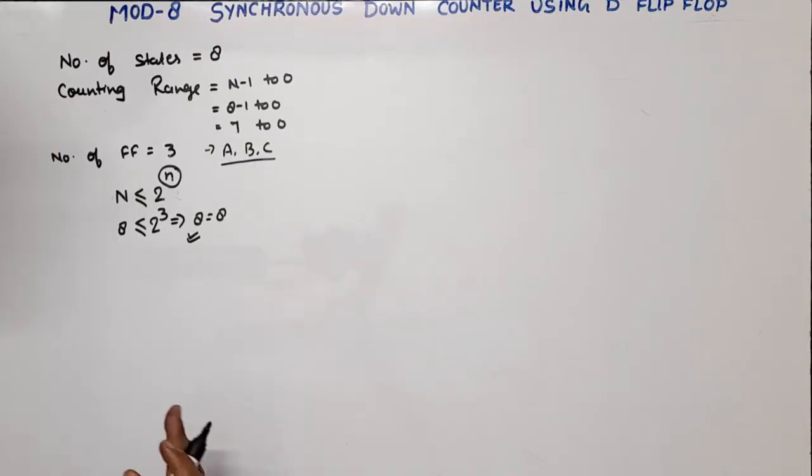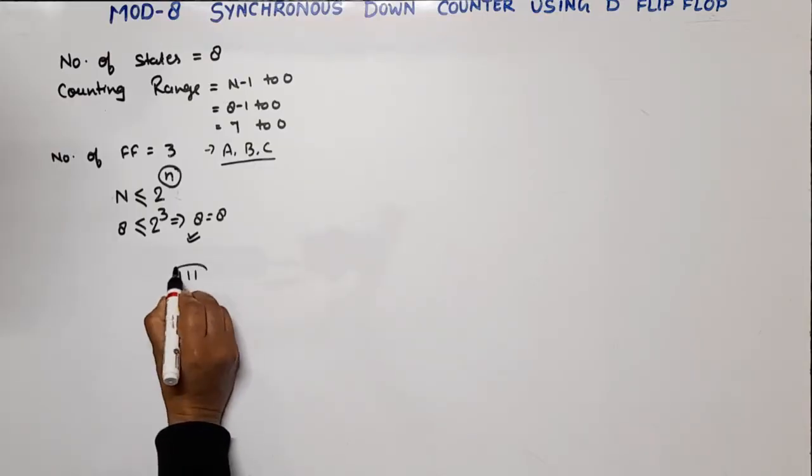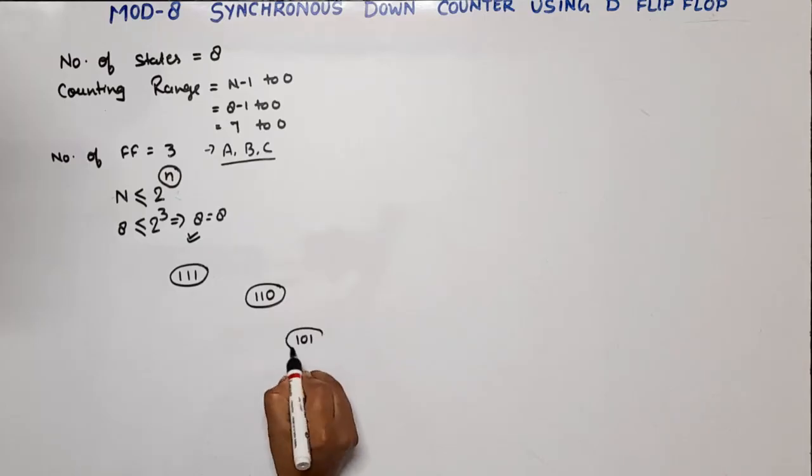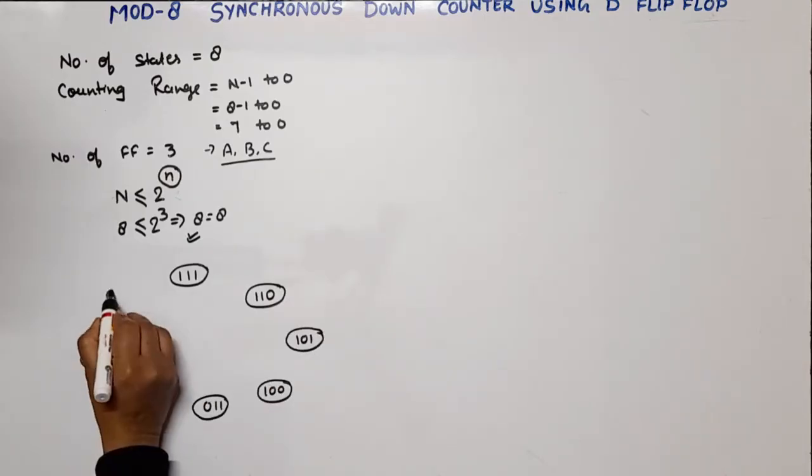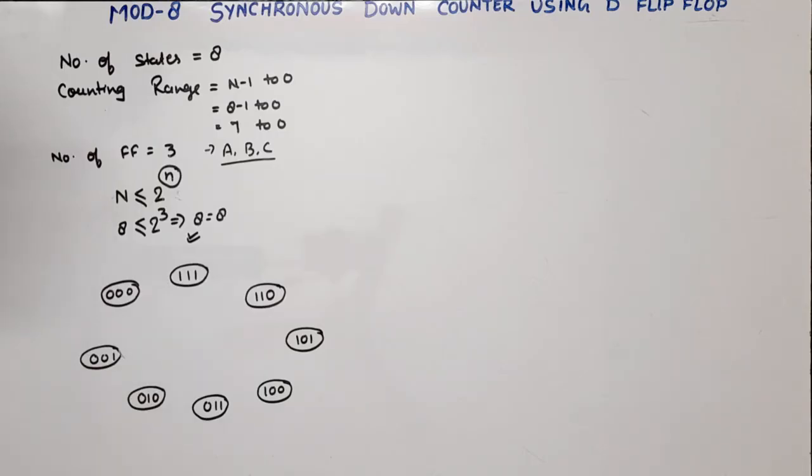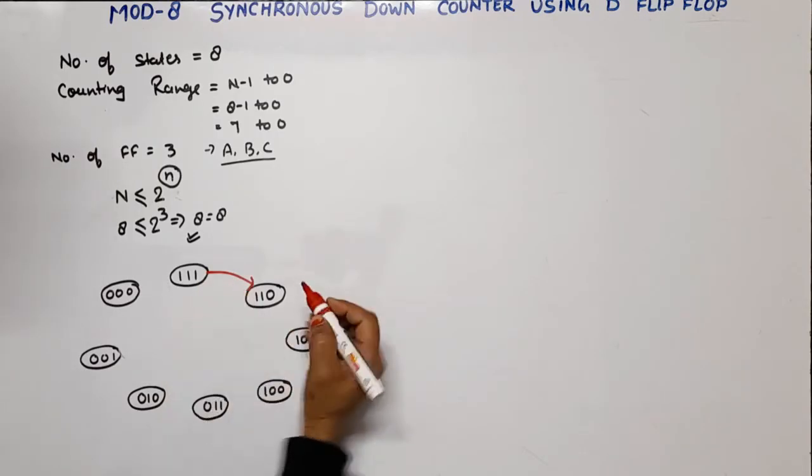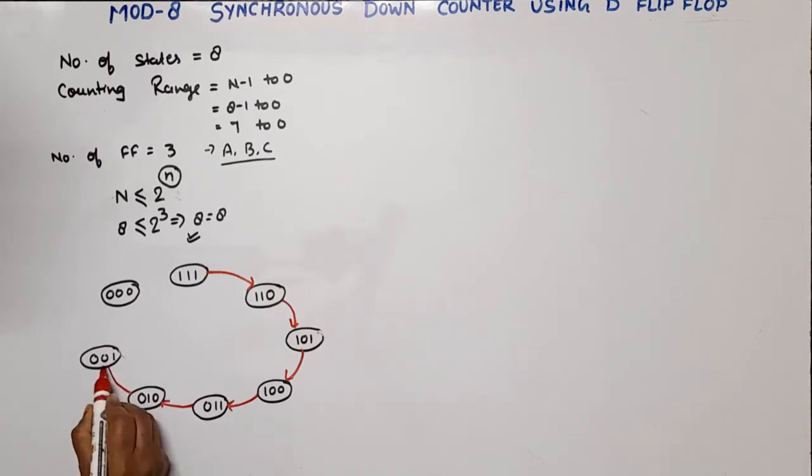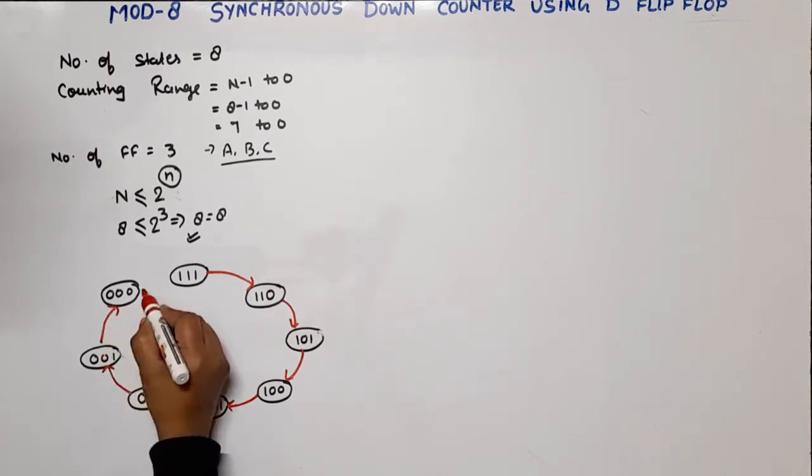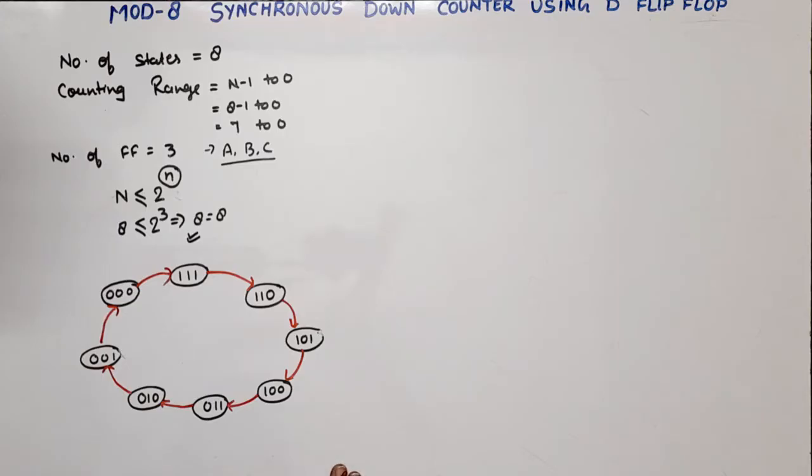Let these flip-flops be A, B, and C. These are the names of the flip-flops. Now I am drawing a state diagram. So these are the eight different states. Now counting starts from 7 to 6, 6 to 5, 5 to 4, 4 to 3, 3 to 2, 2 to 1, and 1 to 0, 0 to 7. So this is the state diagram.